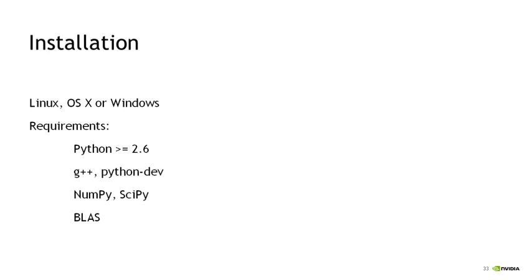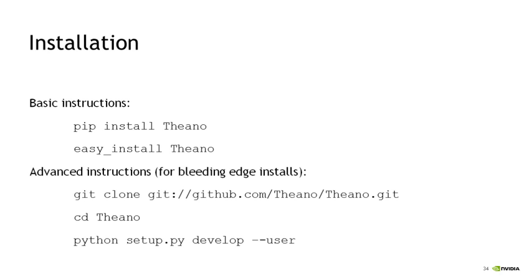What does it take to run Theano? Theano runs on many Linux distributions — Ubuntu, Fedora, CentOS, Red Hat Enterprise Linux — you can find the complete list on the Theano website. It also runs on Mac OS X and Windows. Requirements are Python greater than 2.6, the G++ compiler, NumPy and SciPy Python libraries, and a BLAS library. Installation is very easy with pip install Theano or Easy Install for the current stable release. For bleeding-edge features, you can clone the Theano source from GitHub and use the Python setup script.